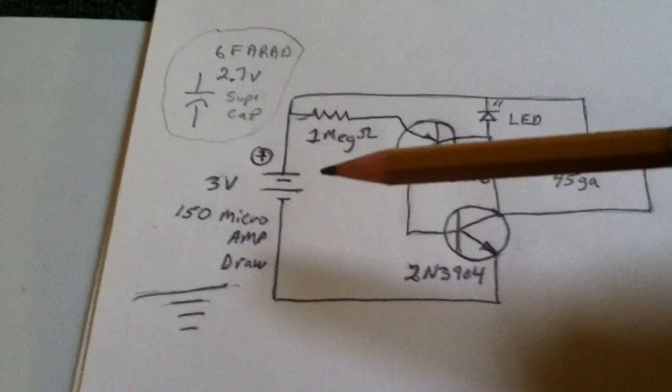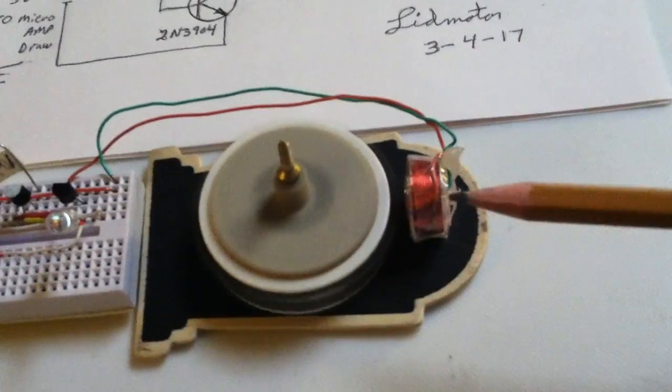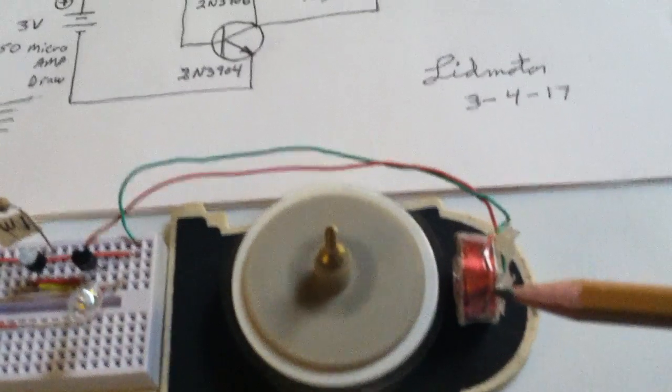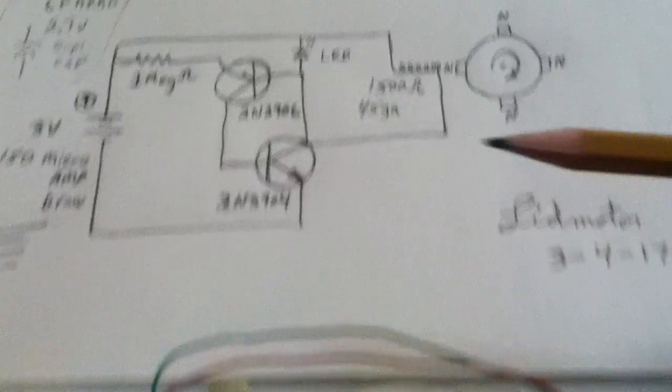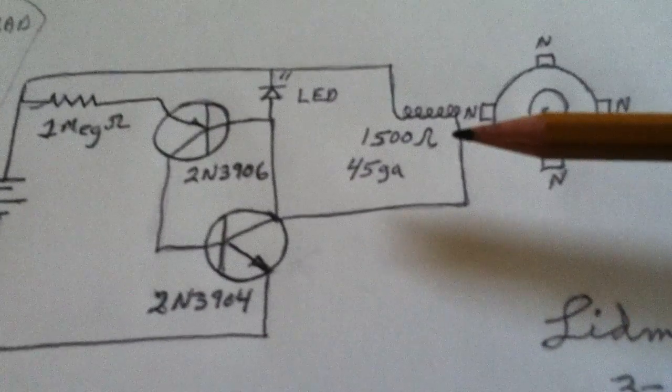I upped the voltage to 3 volts so that I could use a super cap filled up. And I changed the coil to a very fine wire, 45 gauge with 1500 ohms resistance.